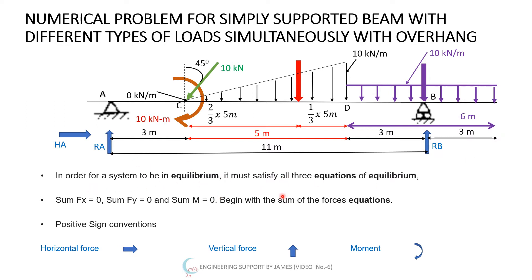For the system to be in equilibrium it must satisfy all three equations of equilibrium: summation of forces in the X direction equals zero, summation of forces in the Y direction equals zero, and summation of moments equals zero. Sign convention: horizontal left-to-right is positive, right-to-left is negative; vertical upward is positive, downward is negative; clockwise moments are positive, anti-clockwise are negative.